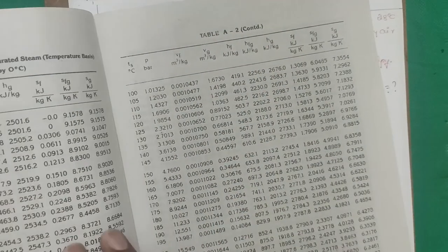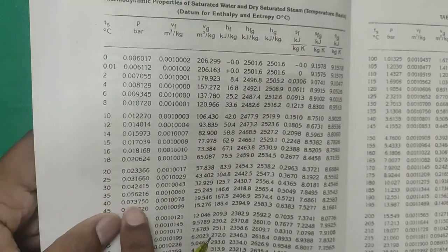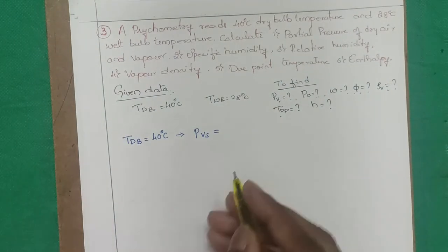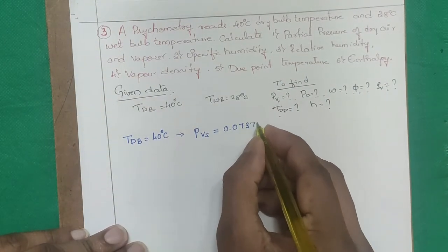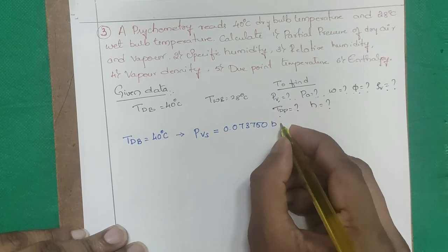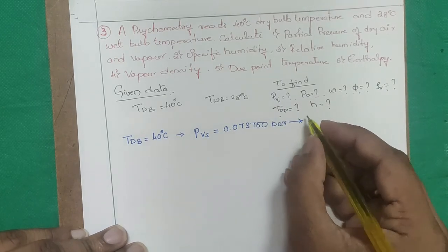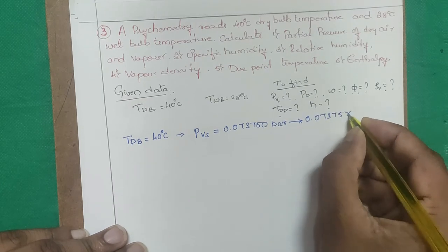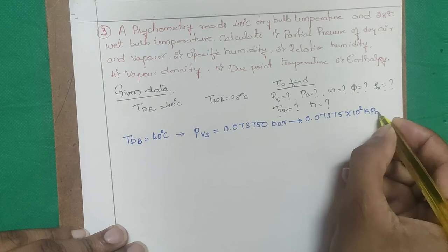From the steam table at Tdb = 40°C: PVS = 0.073750 bar = 7.375 kPa.